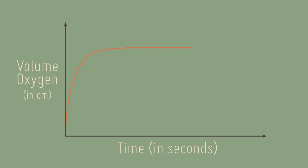We can measure the rate of this reaction at any point by selecting a point on the curve and drawing a line tangent to the curve. Calculating the gradient of the tangent will give you the rate of the decomposition of hydrogen peroxide at that point in time. A steeper gradient is representative of a faster rate of reaction, whereas a less steep gradient is representative of a slower rate of reaction.